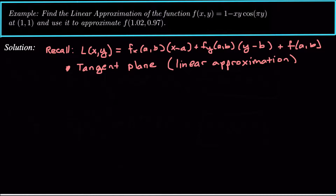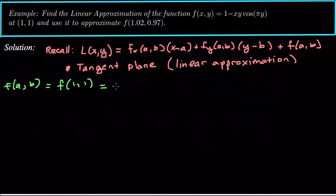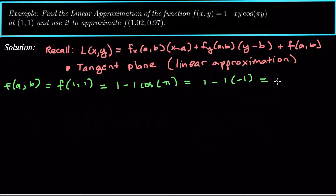Let's find the linear approximation. We need to find f(a,b), which is f(1,1). We just plug in x=1, y=1 into the function. That's 1 minus 1 times 1, which is 1, times cosine of pi times 1. So that's 1 minus 1 times negative 1, which is 1 plus 1, which equals 2. So our function value at the end of the linear approximation is 2.